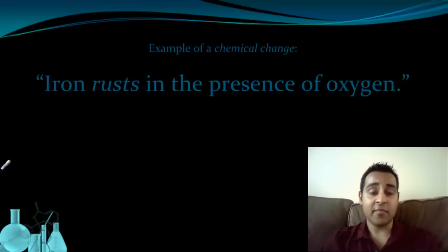Let's start by looking at an example of a chemical change or a chemical reaction. Iron rusts in the presence of oxygen. Now, it also needs to have water or air moisture present, but this will suffice for our purposes. Iron rusts in the presence of oxygen.